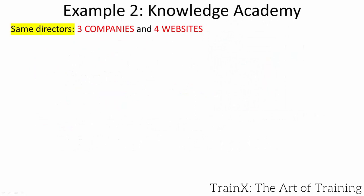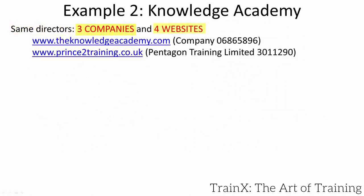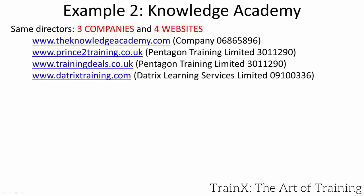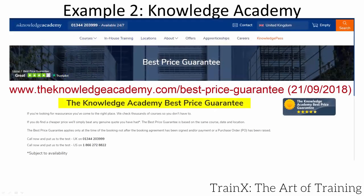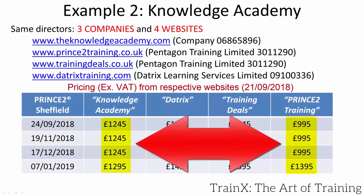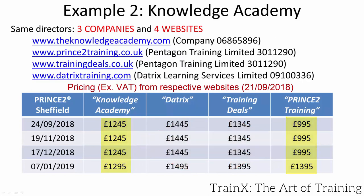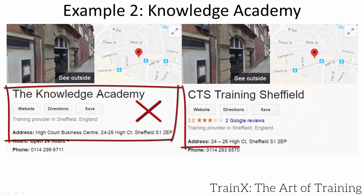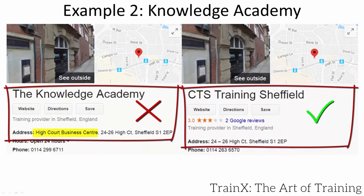Knowledge Academy's directors have multiple companies in order to gain Google results and capture business from people who may choose to avoid Knowledge Academy. Knowledge Academy claim to provide the best pricing in the industry, but their own other companies often have lower pricing. The address in Sheffield is essentially faked to gain a Google Local listing — the office was disused and is now entirely utilised by CTS Training, who knew nothing of Knowledge Academy's usage.